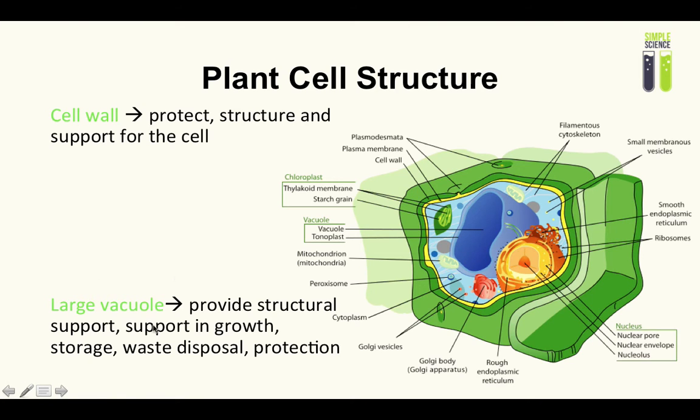Another thing is the large vacuole. It provides structural support. Animal cells do not have a permanent vacuole; ours is temporary, it shrinks and leaves depending on how much water we have. But a plant cell will always have a vacuole in itself, no matter whether it's shrunken or not. Its job is to provide structural support, growth, storage, waste disposal, and protection.